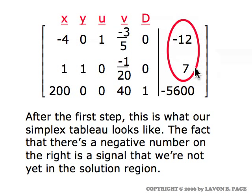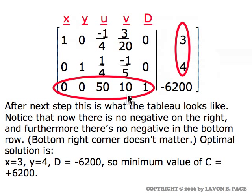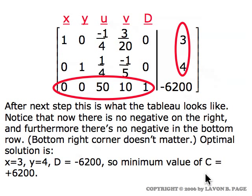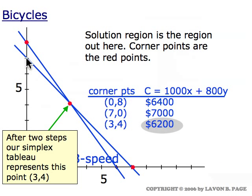After the first step, looking at where negative numbers lie, the negative twelve is the only one we see, so our second step involves picking a pivot element from either column one or column four. We did the next step, and after that we were looking at a tableau with no negatives in the far right column and no negatives in the bottom row. No negative on the far right indicates we are in the solution region, and no negative in the bottom row indicates we have landed at the best corner point. Running through the interpretation: we're at X equals three, Y equals four, D equals negative sixty-two hundred, so C equals positive sixty-two hundred. Our second step carried us to the point X equals three, Y equals four — the optimal corner point in terms of minimizing cost.